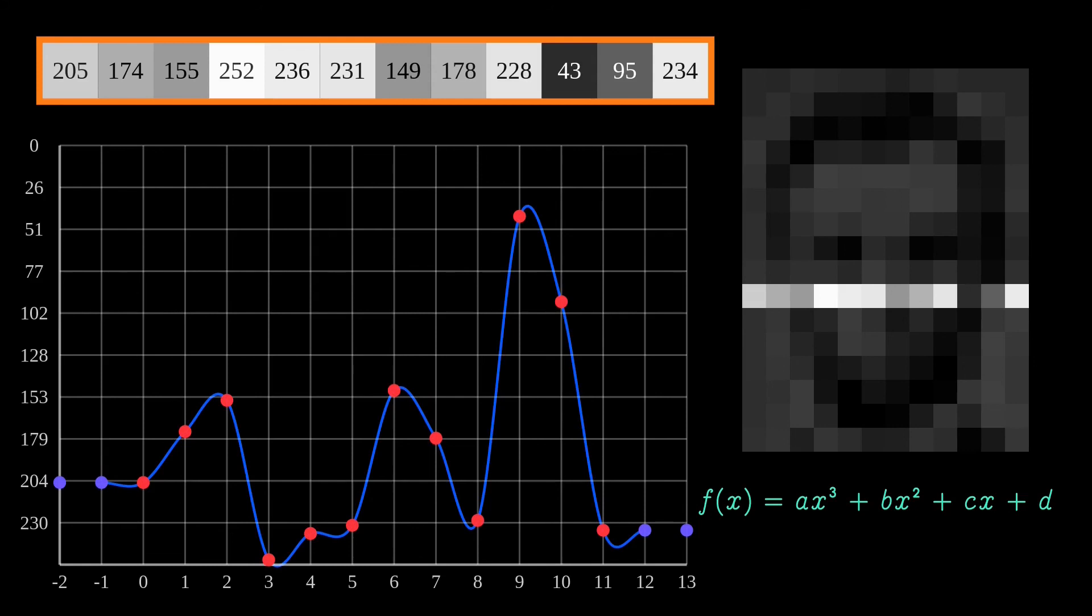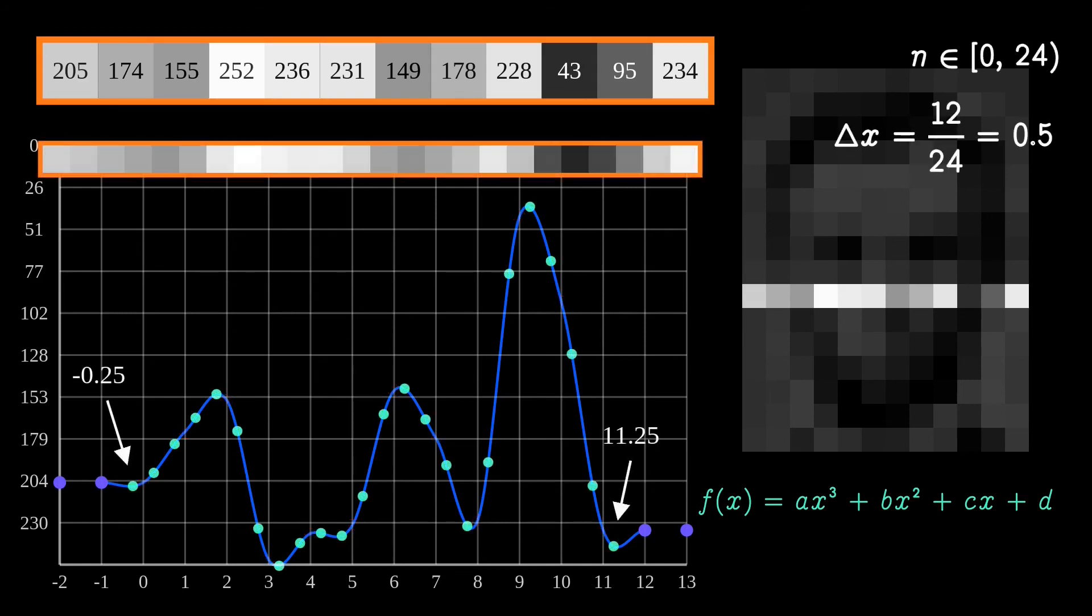This is because when upscaling the image, there will be negative indices on the spline. To see this, let's double the number of pixels. This is what we get. The first index is minus 0.25, and the last one is out of bounds at 11.25, as the original row goes from 0 to 11. We double the number of pixels in each row of the image. And this is the result.